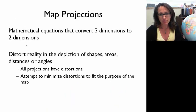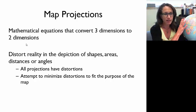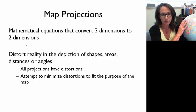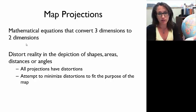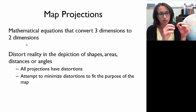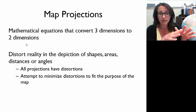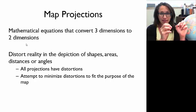Map projections are actually mathematical equations that are converting our three-dimensional Earth into a two-dimensional map. In that process, reality gets distorted, so it's impossible for us to take our 3D globe and render it on a flat map without having some kind of distortion. Our goal with projections is to try to minimize the distortion as much as possible and to make that minimization of distortion fit the purpose of the map that we're working with.